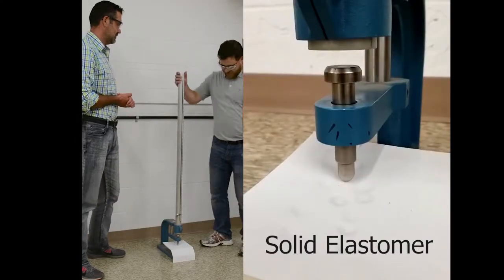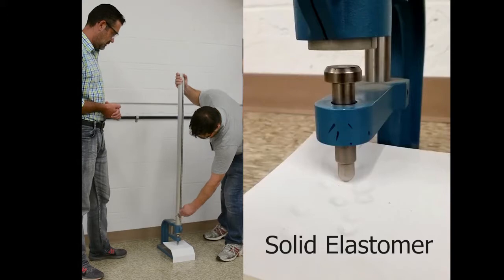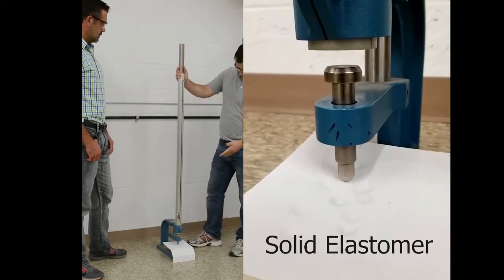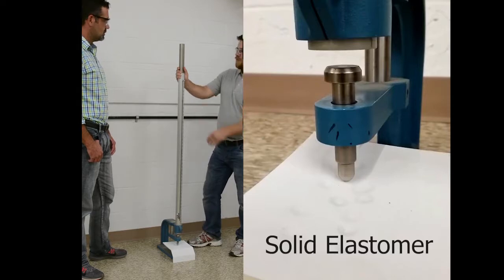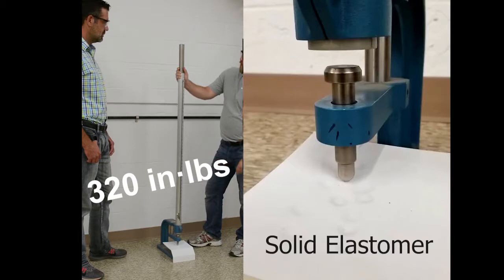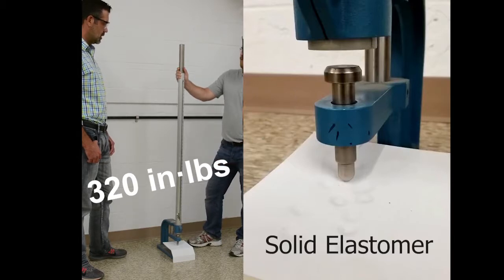So this consists of an 8-pound sliding weight that moves along this 40-inch long track. You have your 8 pounds times 40 inches gives you 320 inch-pounds of force. That's what's being applied at that small little anvil and bind.